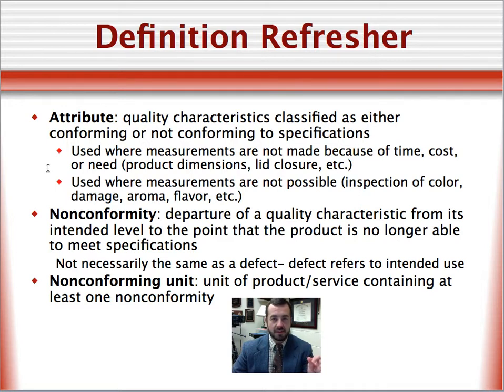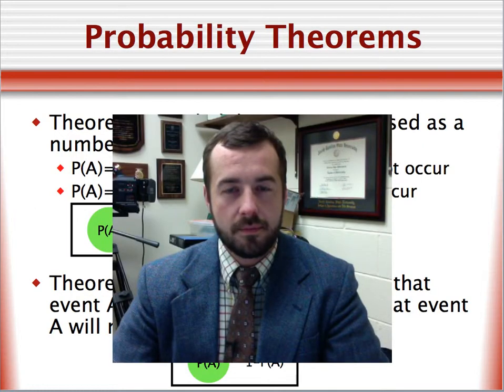So it's either a yes or no thing. So that means that it is bimodal. It's either conforming or it's not conforming. Which brings us to the last definition here, is a non-conforming unit. It's the unit of a product containing at least one non-conformity. Okay, so now we're ready to tackle the first two probability theorems.